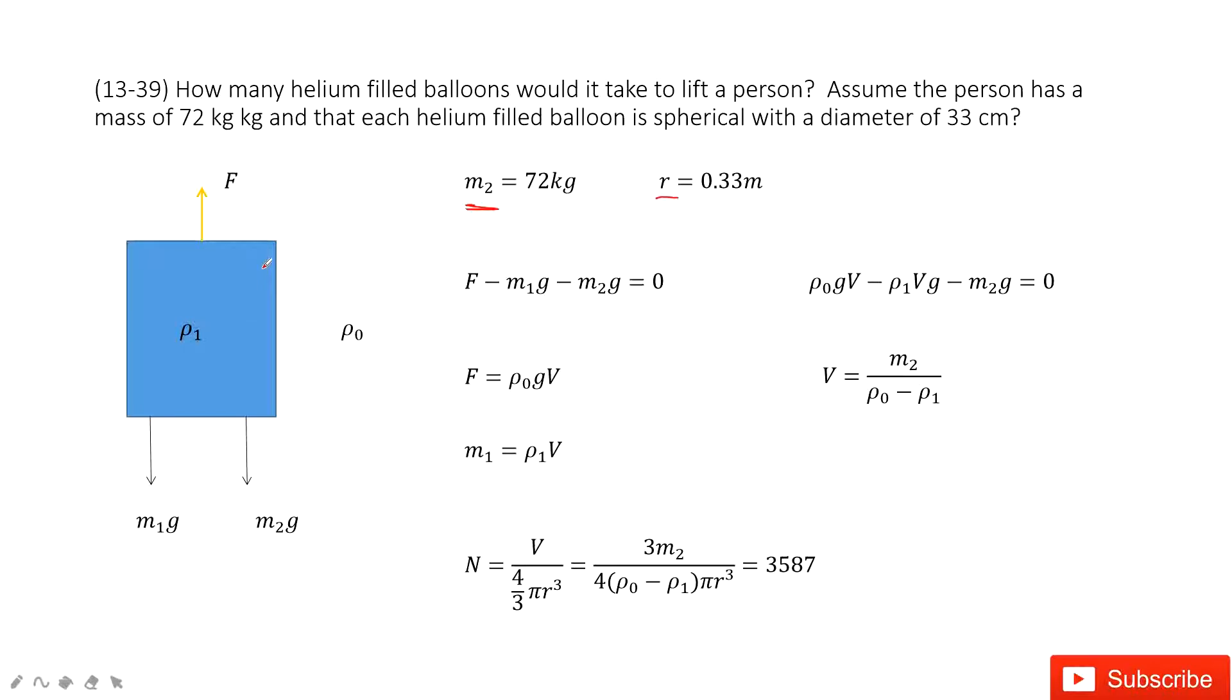When we want to make sure the system is statically balanced, the buoyancy must equal the gravity of the person and the gravity of this gas. So buoyancy minus m1g minus m2g equals zero.